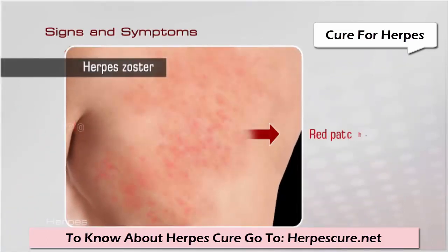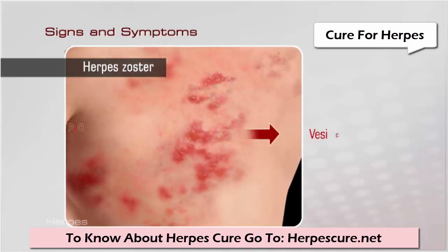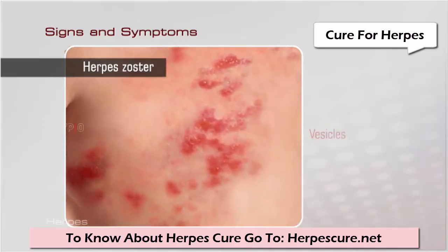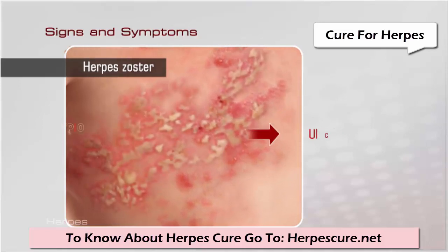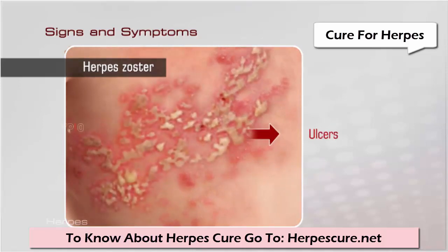Herpes zoster: The first symptom that appears is severe pain and burning or tingling sensation in the area where the rash develops. The rash may appear as red patches on the skin, followed by small vesicles which form ulcers and crust off within seven to ten days. Other symptoms such as fever, tiredness, headache, and itching may also accompany the rash.